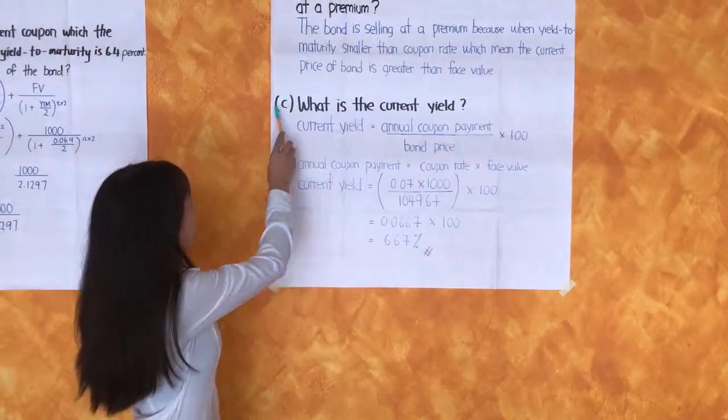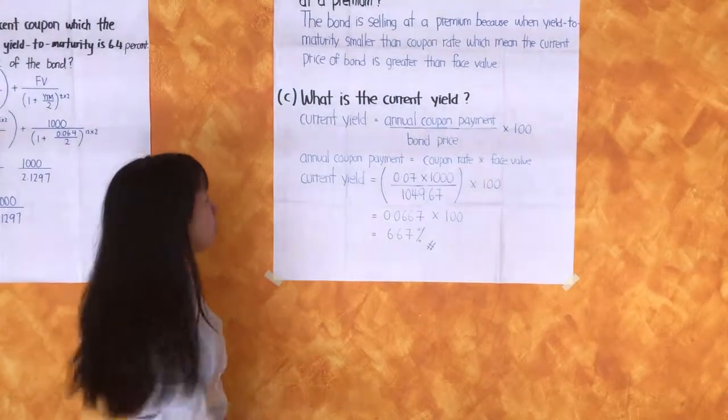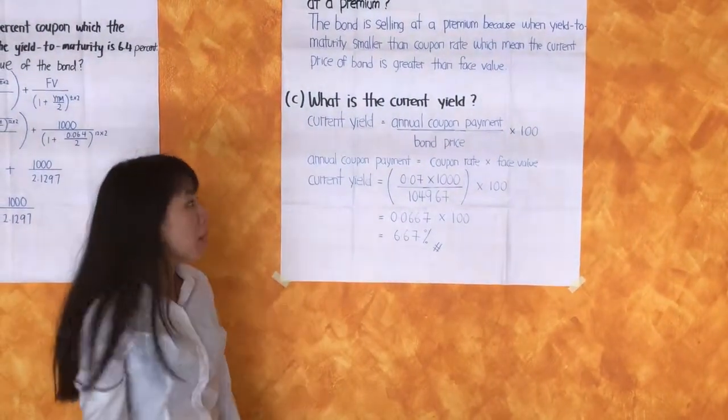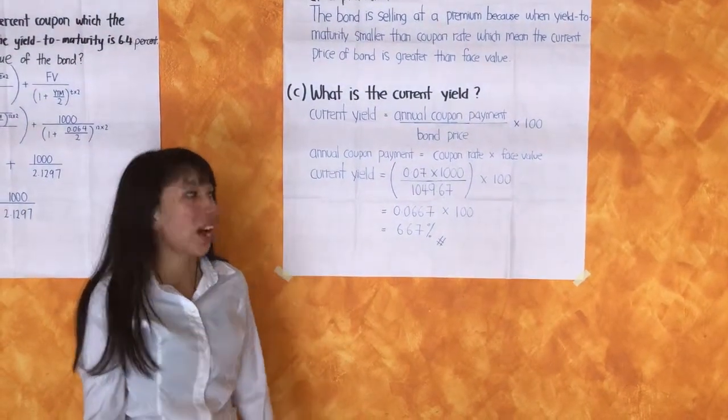Question C: What is the current yield? The current yield is the annual coupon payment divided by bond price times 100.